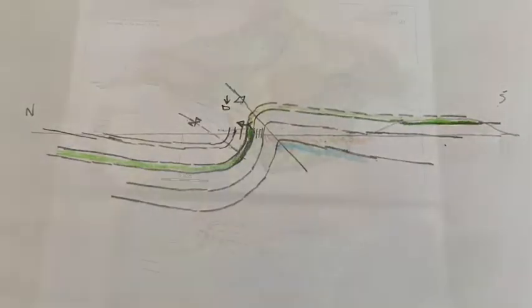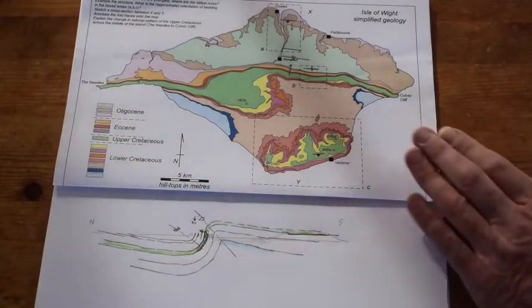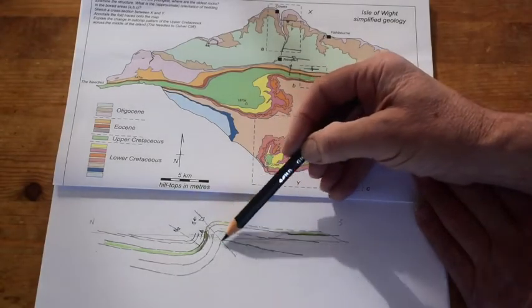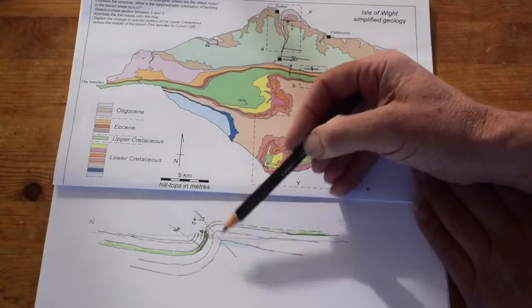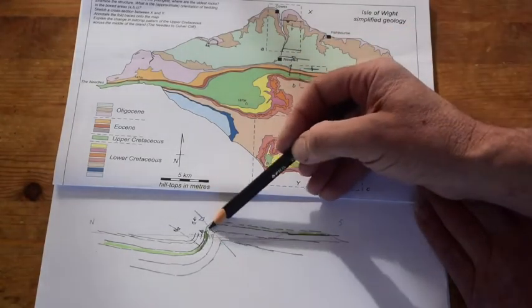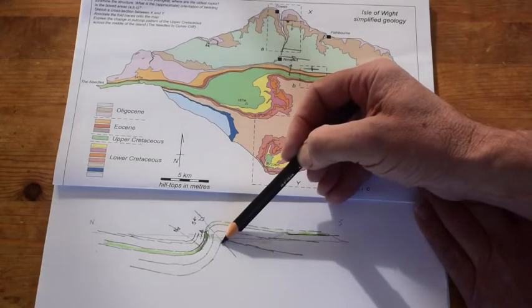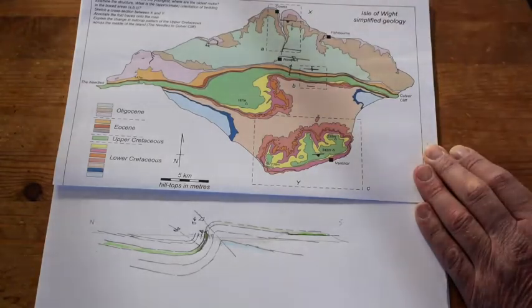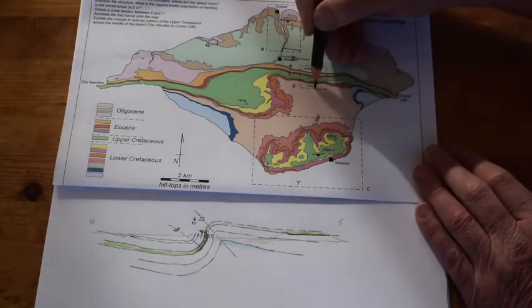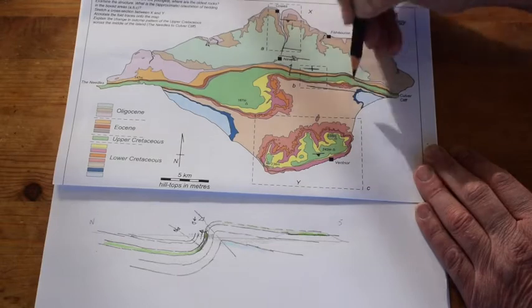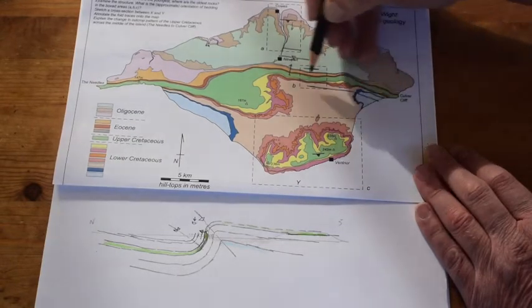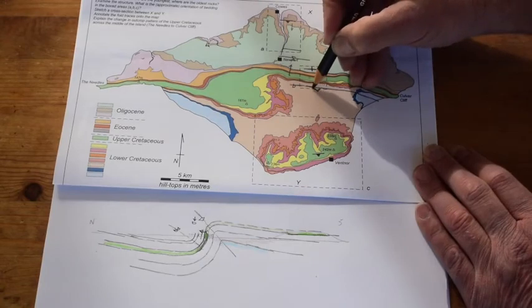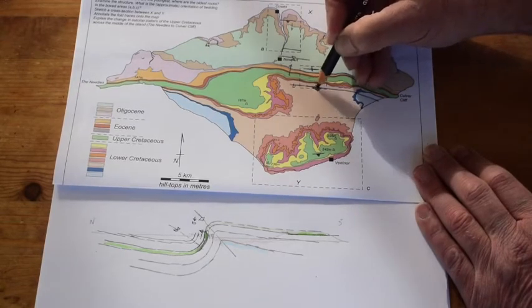So we can now take this understanding from the cross section back to the map. Let's see if we can trace out where this anticline runs on the map. And the axial trace is just at the edge of the very steep rocks, so presumably comes through here on our map, and it's going to run down through here like this.